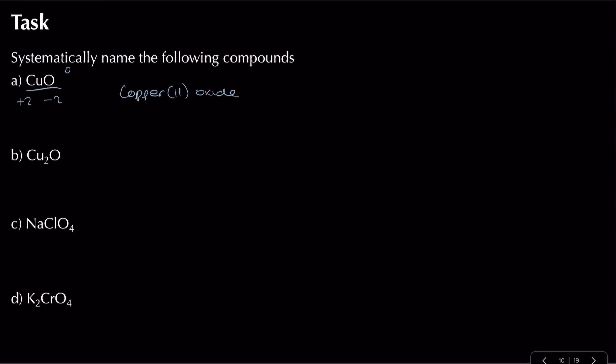For Cu2O: oxygen is minus two, overall oxidation state is zero, so copper must be plus one in this case because we've got two coppers and need plus two to balance — plus one each. That gives copper(I) oxide.